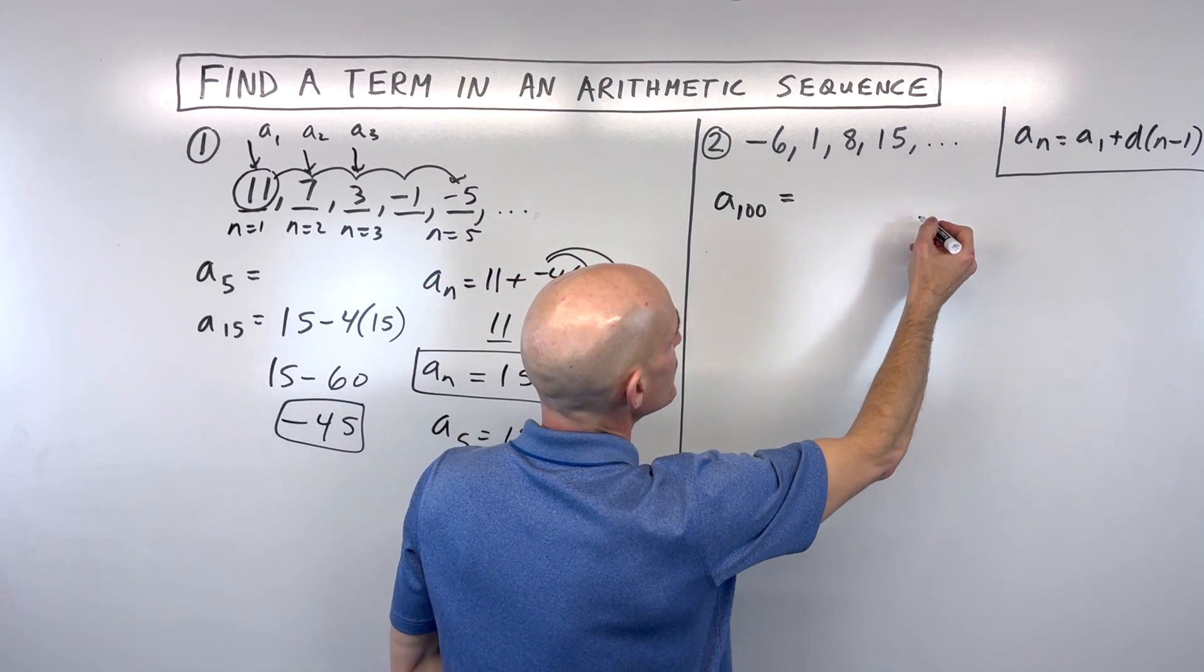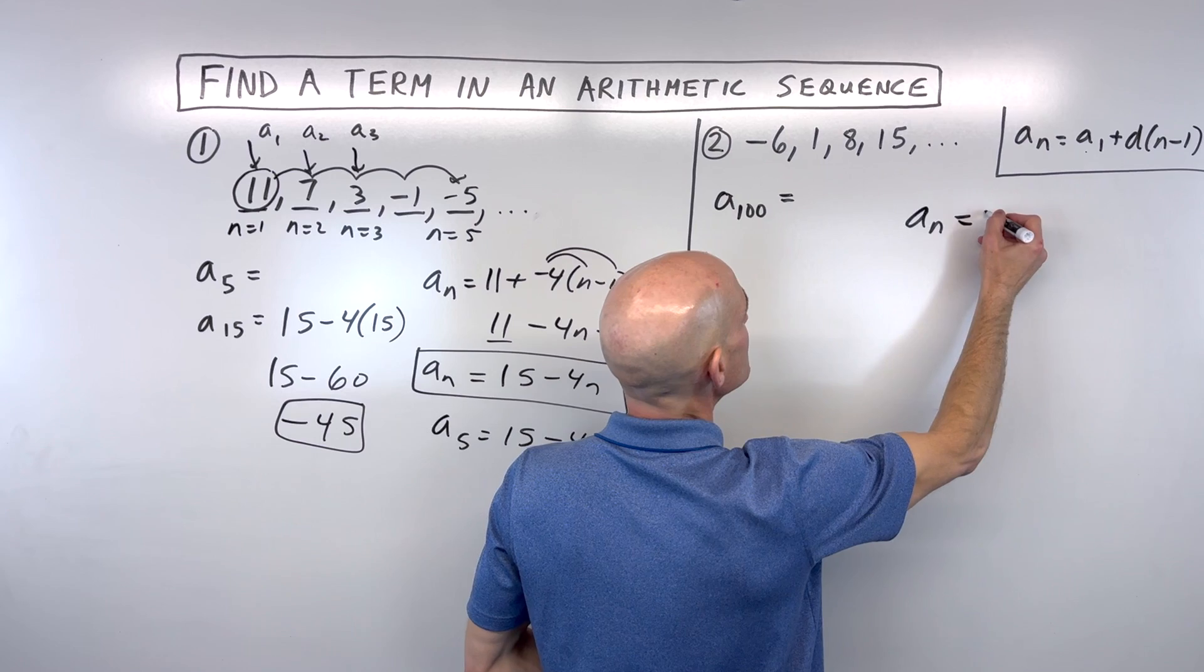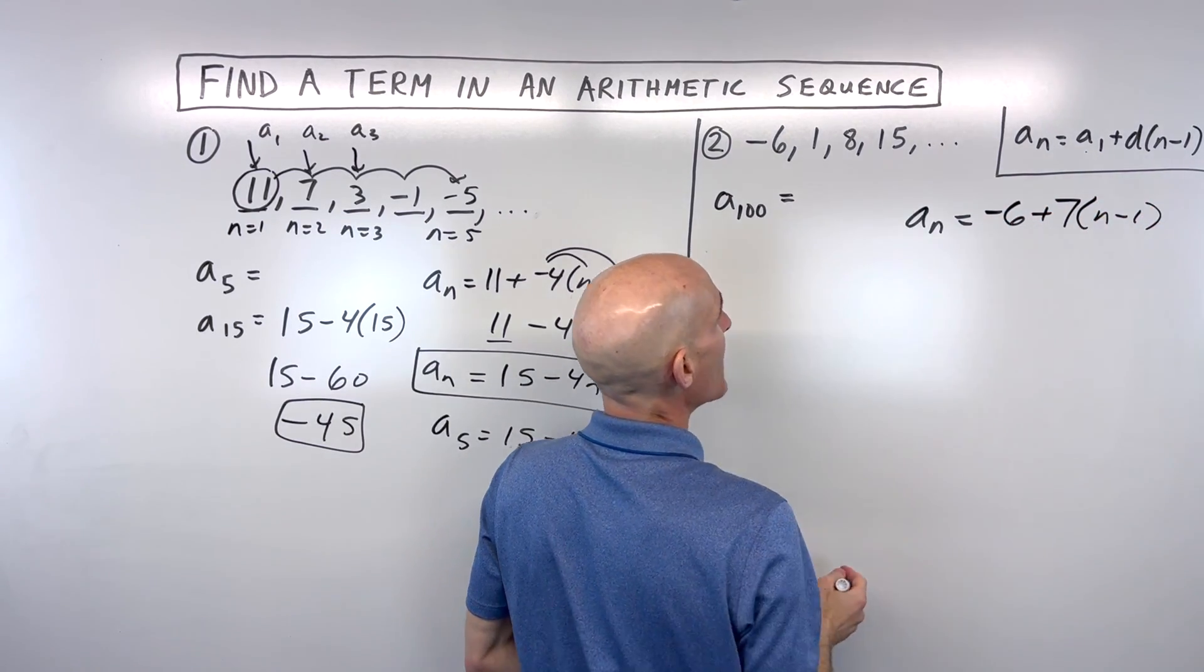So here we want to find the value of the 100th term. Let's see if we can write a formula first to find any term. So we're going to start with our first term, which is negative 6. We're going to add our common difference, which is 7, n minus 1 times.